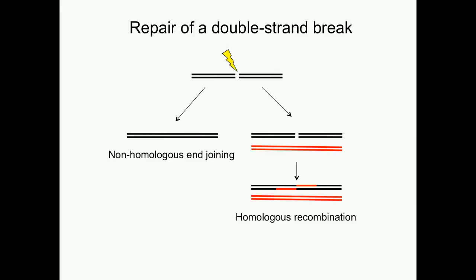After a double-strand break occurs, there are multiple pathways that can be utilized to repair the damage, and two of the main pathways are shown here. During non-homologous end-joining, the DNA ends are re-ligated together, and this is a potentially error-prone repair pathway. Whereas during homologous recombination, a homologous template is used for repair, and so it's generally considered error-free.